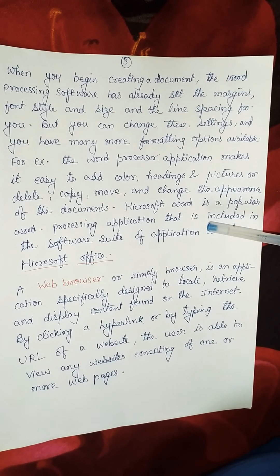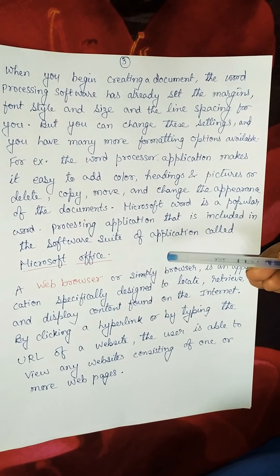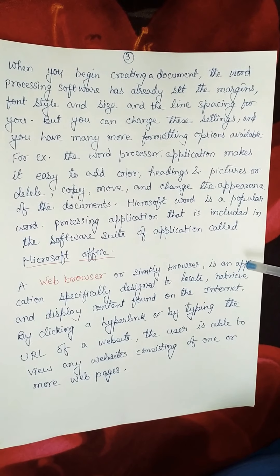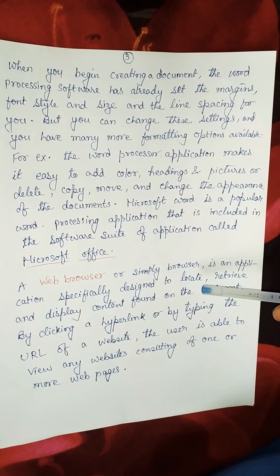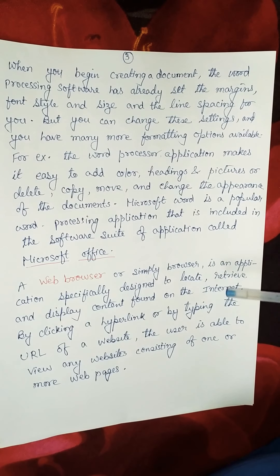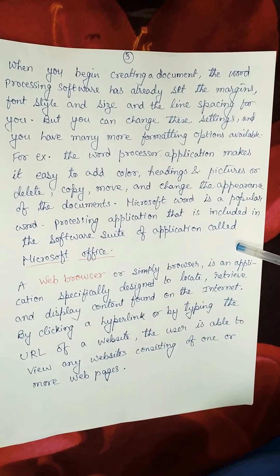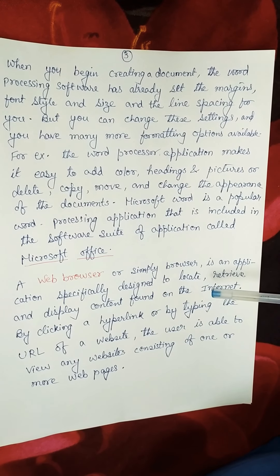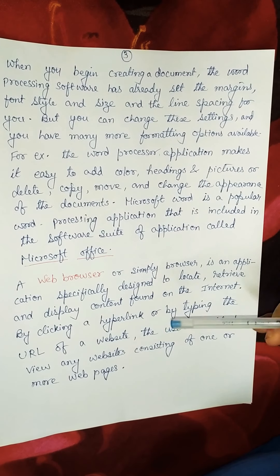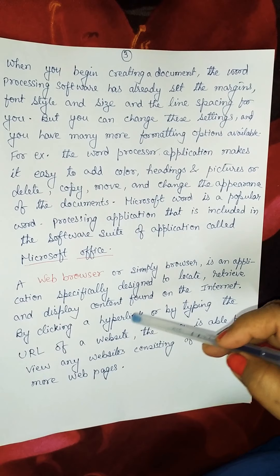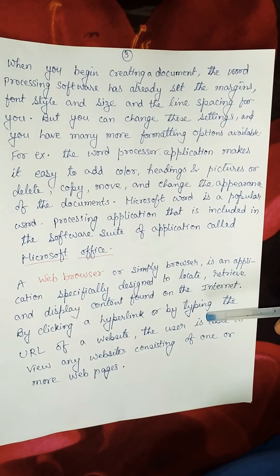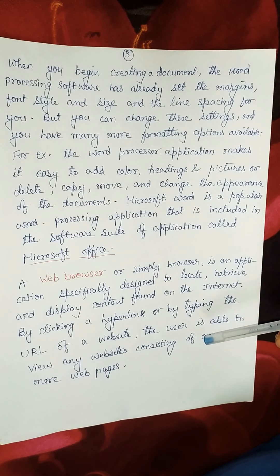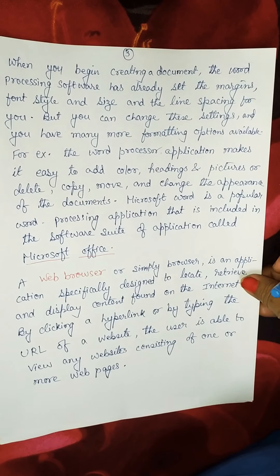Microsoft Word is a popular word processing software included in the software suite called Microsoft Office. A web browser, or simply browser, is an application specially designed to locate, retrieve, and display content found on the internet. If you click on or type a URL of a website, the user is able to view web pages.